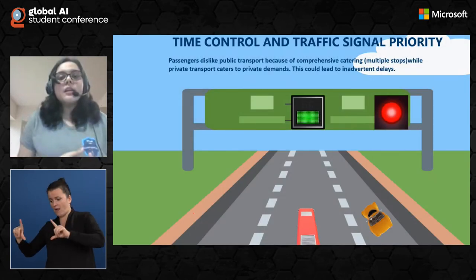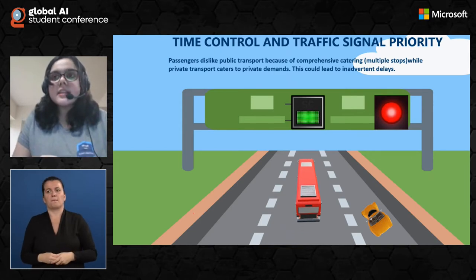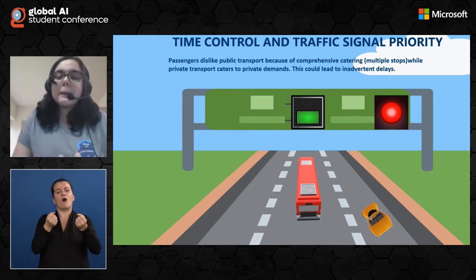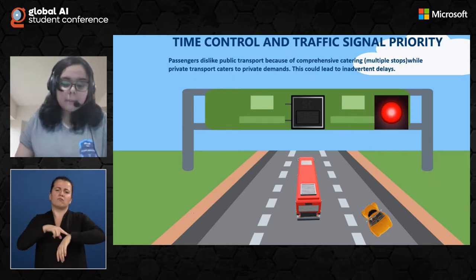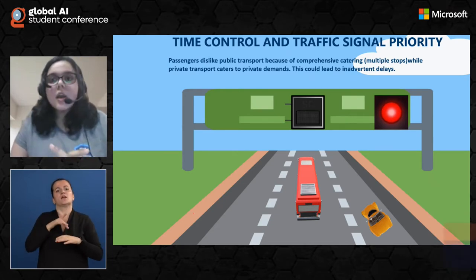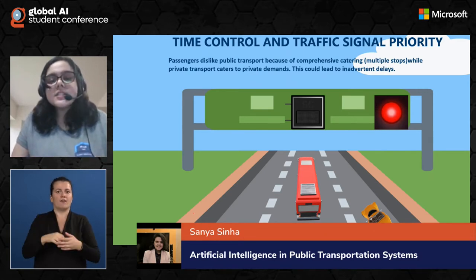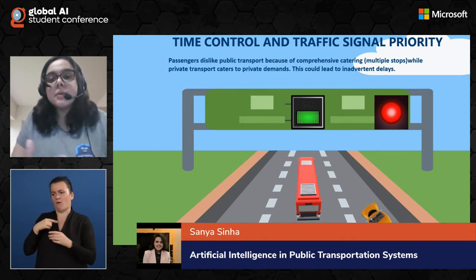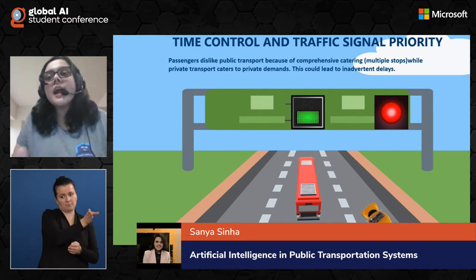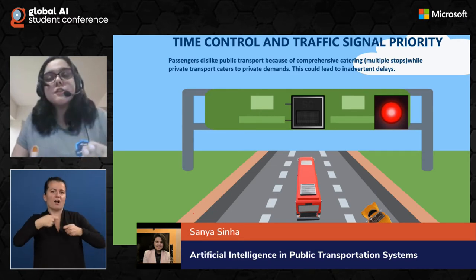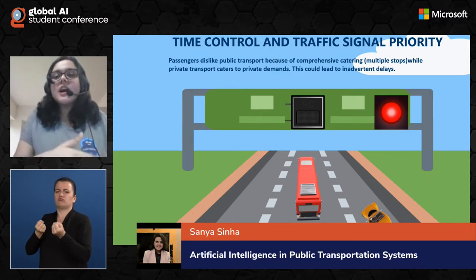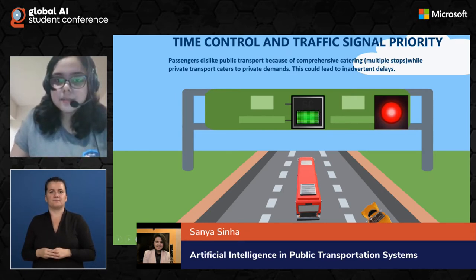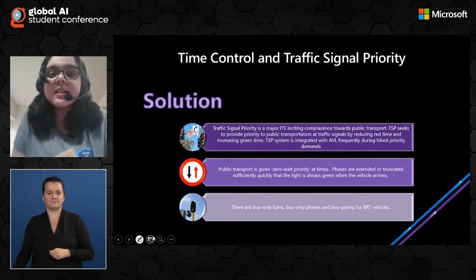The second problem with public transportation is that it usually takes a lot of time to cater to individual passengers. Passengers dislike public transportation because of comprehensive catering — they have to stop at multiple positions, while private transport caters to private demands only and has just one ultimate destination in mind. Since public transport has multiple destinations and stops at multiple occasions, it can lead to inadvertent delays, causing the population pool to shift towards private transportation.